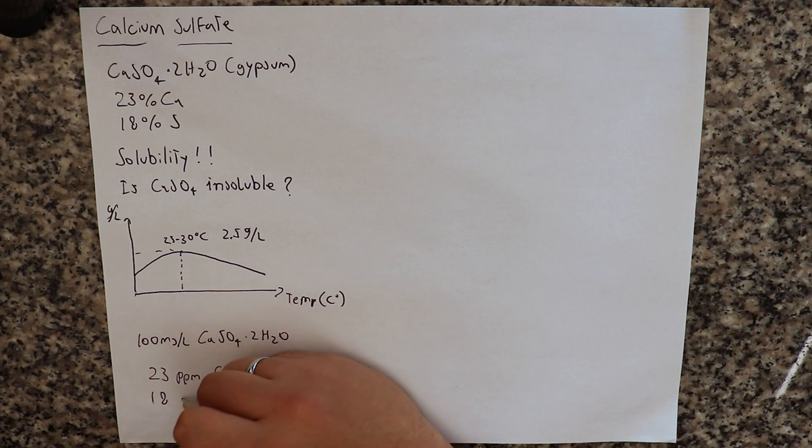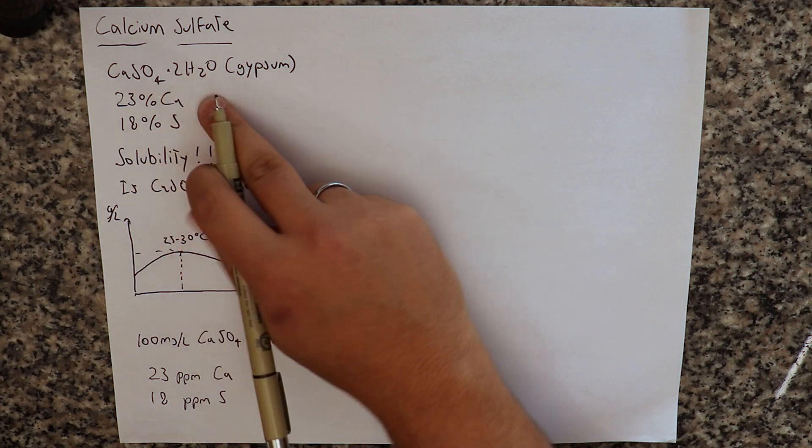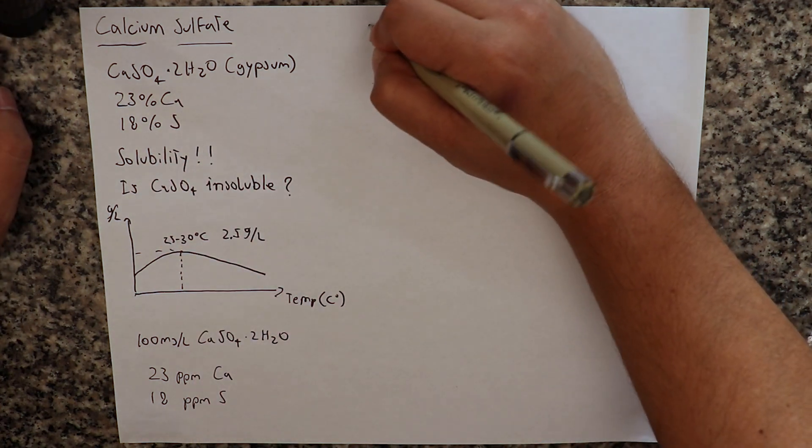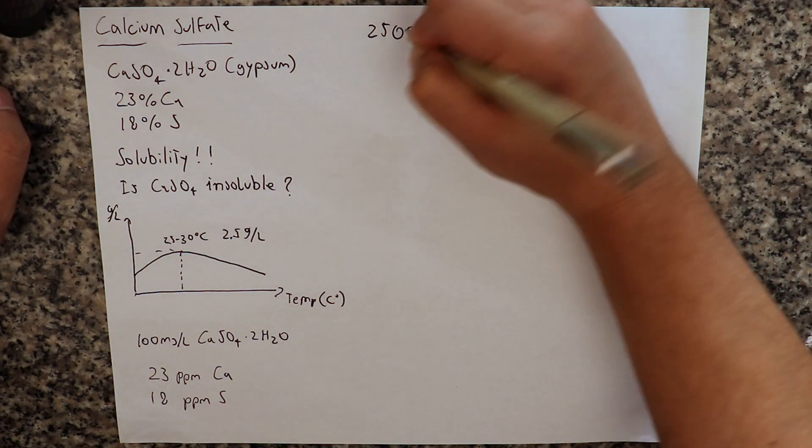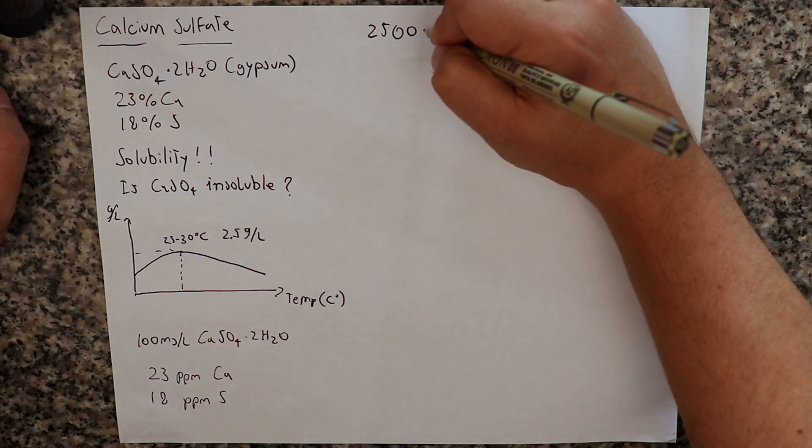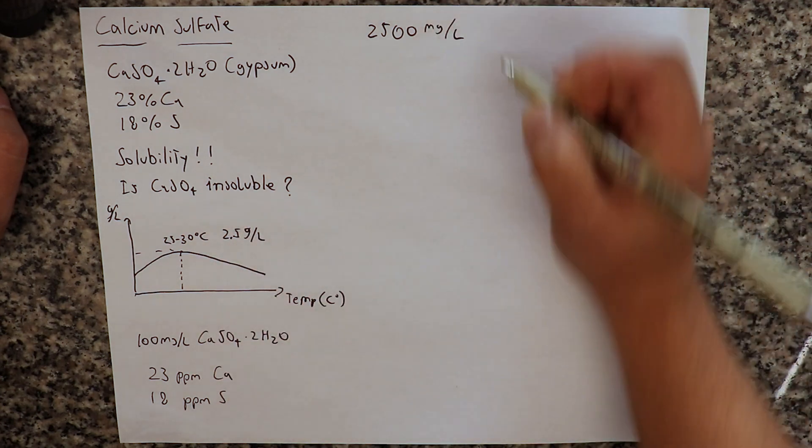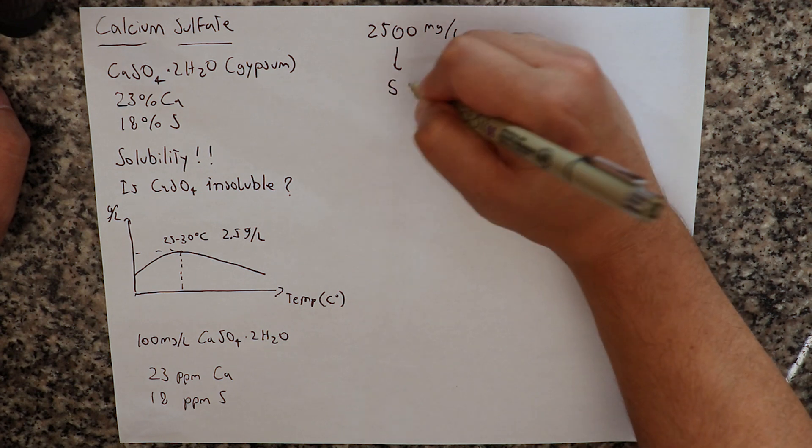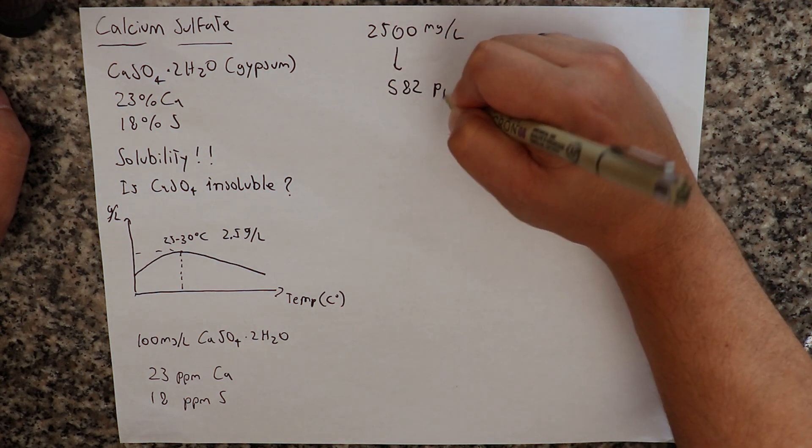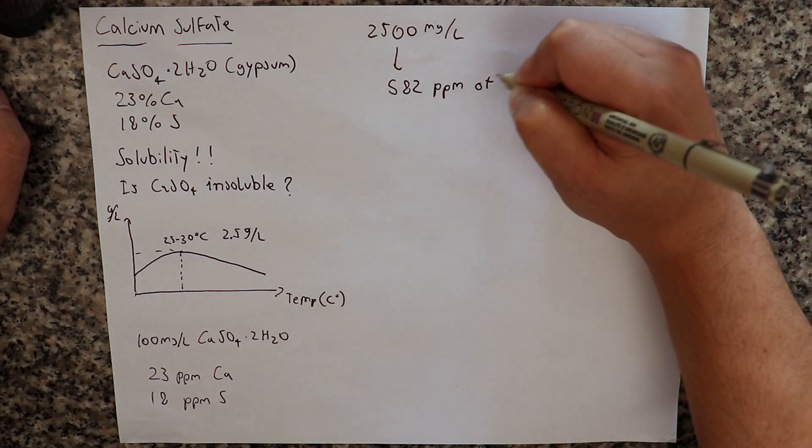And 18 ppms of sulfur. We know that from the composition values. Now this means that if we go to 2500, which is 2.5 grams per liter, then this would give us 582 ppms of calcium.